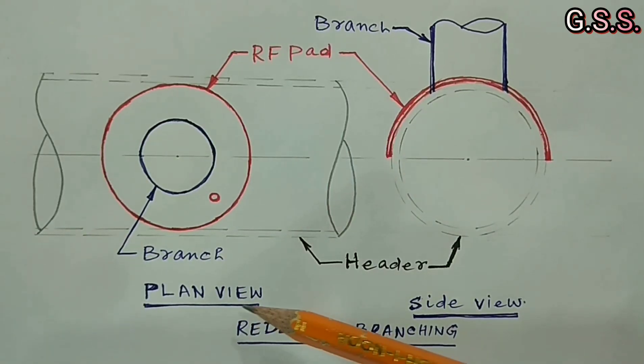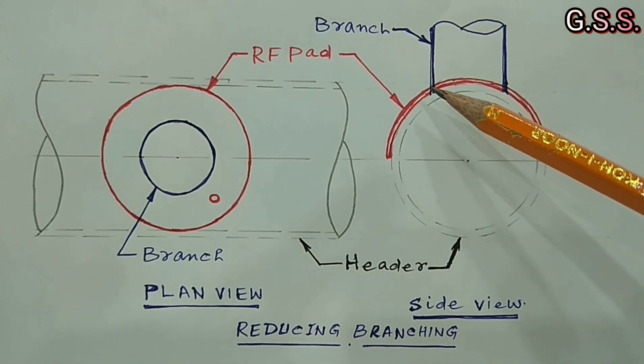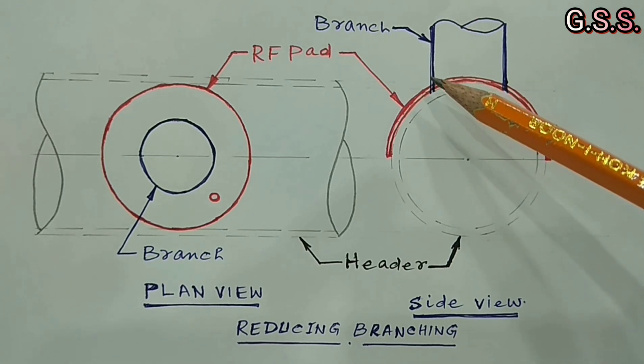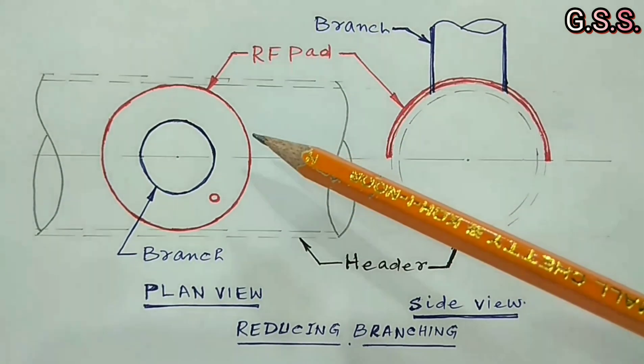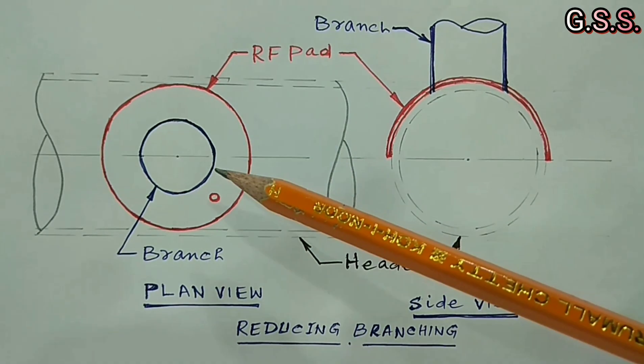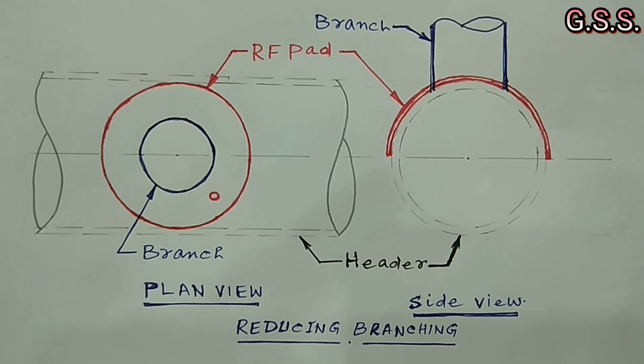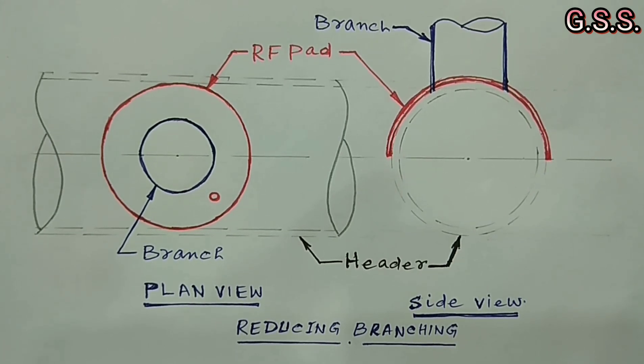This is plan view and side view of a reducing reinforced branching. This is the header pipe. This is the branch. And this is RF pad. RF pad diameter is twice the diameter of branch. So, for branch having size half of header size and below, this type of circular RF pad will be there.